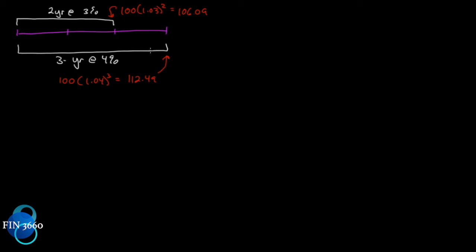For the three-year investment, we have a hundred dollars and it will grow to $112.49, because we're getting three years at four percent — so it's 1.04 to the power of three. That's fairly easy to see. But here is where the forward rate lies: it's called an implied forward rate.